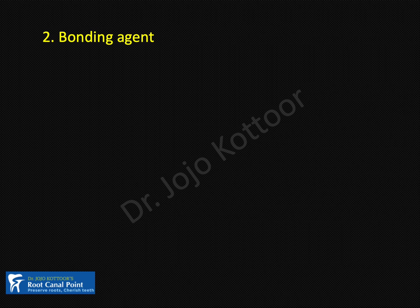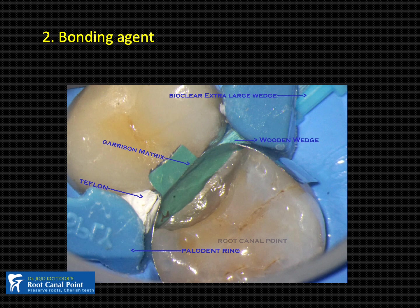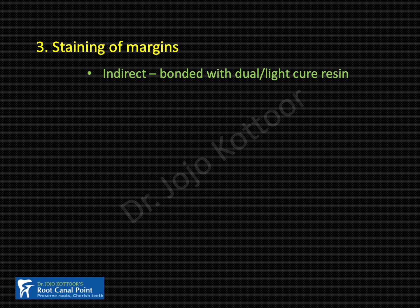The second clinical significance involves the bonding agent. An oxygen inhibitor layer also forms when you cure the bonding agent. For example, when applying bonding agent to the gingival seat of a class II restoration and curing it, the topmost part of the bonding agent forms an oxygen inhibitor layer. If you are not working under rubber dam isolation and the area becomes contaminated after curing, salivary proteins can affect bonding of the composite to the bonding agent, reducing bond strength.